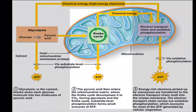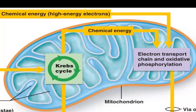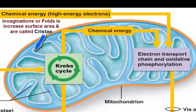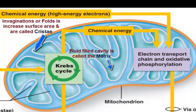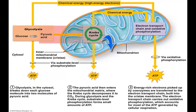The Krebs cycle is found inside the mitochondria, as is the electron transport chain. Before discussing these two sets of reactions further, let's look at the structure of the mitochondria. It is a kidney bean-shaped structure, and in cross-section it shows many invaginations or folds called cristae. Those cristae outline a fluid-filled compartment known as the matrix, where the Krebs cycle enzymatic reactions take place.